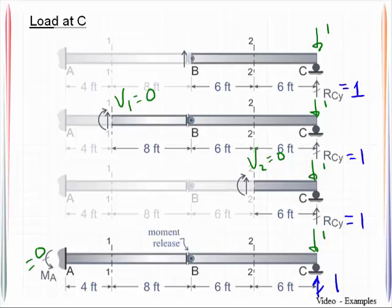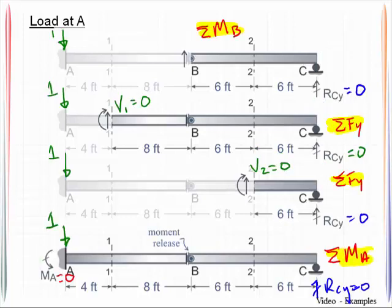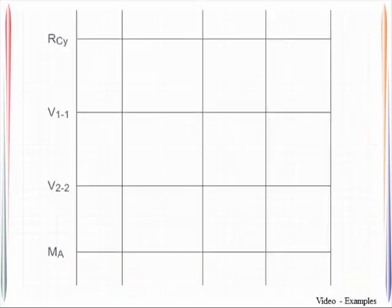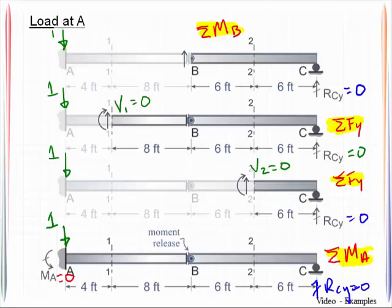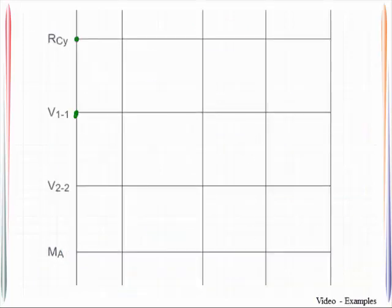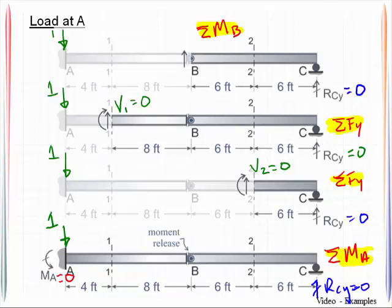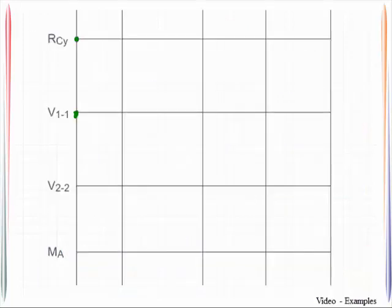So that handles all the statics, and that's really the tedious part of this. What we then need to do is we need to transfer this over to a set of diagrams, because remember, we're trying to sketch the influence lines for these separate response quantities. So I'm going to come back here. Whenever the load is at A, I want you to pay attention to what the responses are for each of these. RCY is 0, so I will plot that down here at 0. Shear at 1-1 is 0, so I plot that at 0. Shear at 2-2 is 0, and the moment at A are both 0. So I'll go ahead and get that.